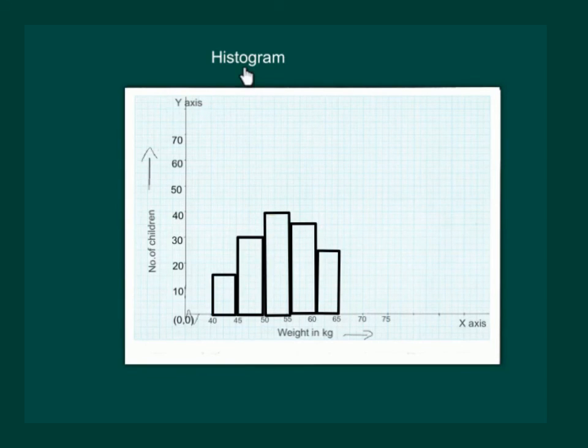To draw a histogram, let us start by taking a graph paper and plot x-axis and y-axis. Also on the x-axis, mark a jagged line showing that we are not marking the weights from 0 to 40 kg. And we are straight away starting from 40 kg. Note we are taking weights in kg on the x-axis and number of children on the y-axis.